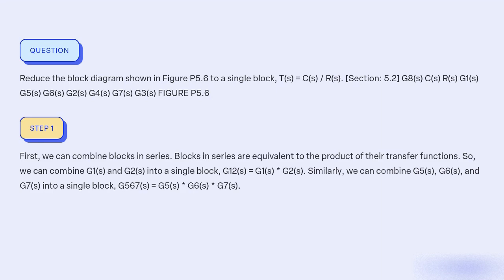First, we can combine blocks in series. Blocks in series are equivalent to the product of their transfer functions. So we can combine G0(s) and G2(s) into a single block, G12(s) equal to G0(s) * G2(s). Similarly, we can combine G5(s), G6(s), and G7(s) into a single block, G567(s) equal to G5(s) * G6(s) * G7(s).